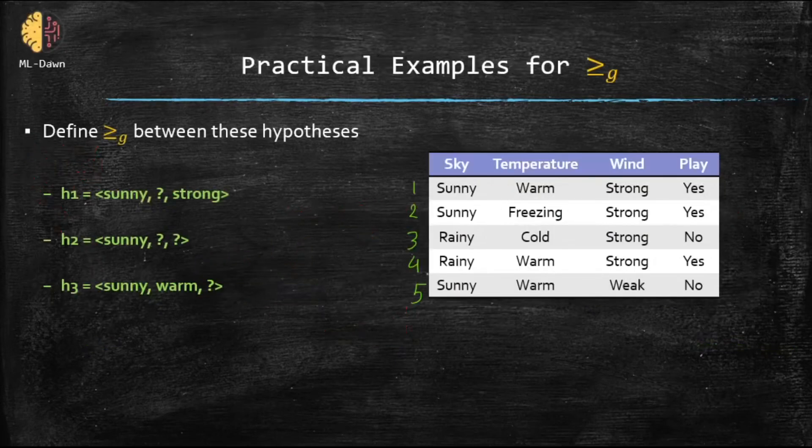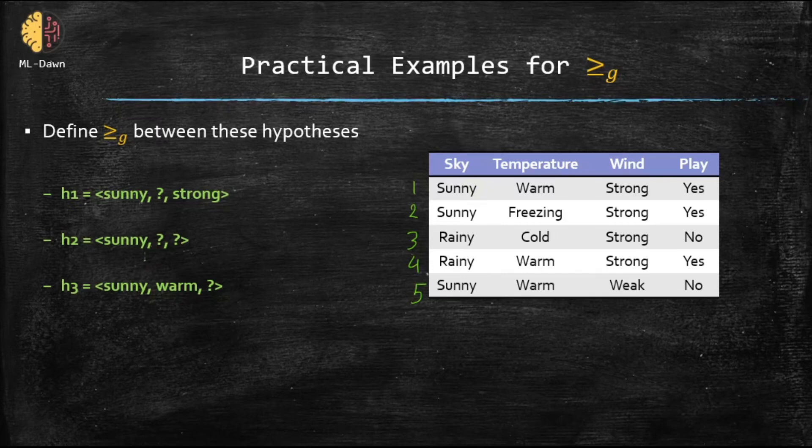Let's get more comfortable with this notation. Consider this example, this table. Define the more general than or equal to relationship between these hypotheses. You can pause the video and think about it. Basically, I want you to tell me which one of these is more general than or equal to the other one. Now I'm going to solve it.